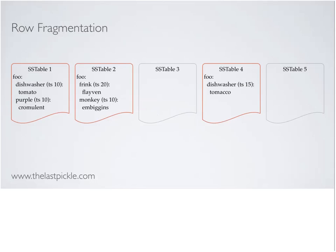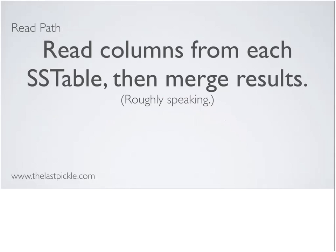After a while, this log-structured storage engine has been creating new files on disk, and we end up with one row — say 'foo' — distributed over three different SSTables, with five SSTables on disk total. Our read path has more work to do — it has to read the columns from each SSTable and then merge the results. That sounds inefficient, and though we do it in an efficient way, that is generally what we need to do.